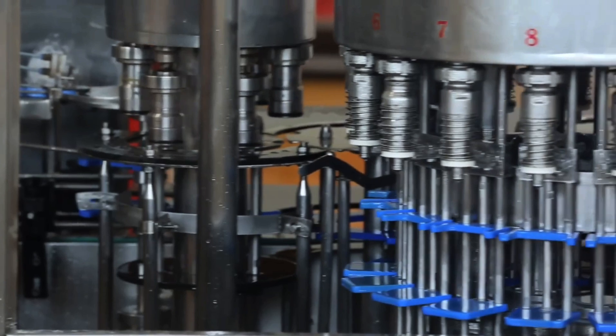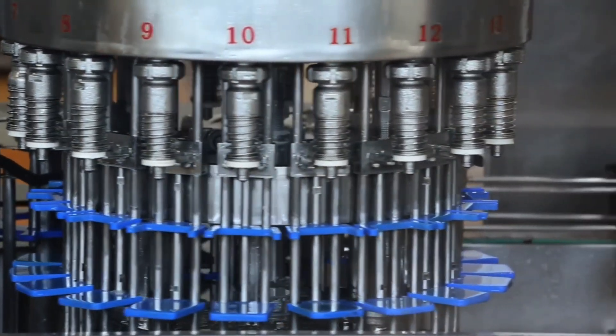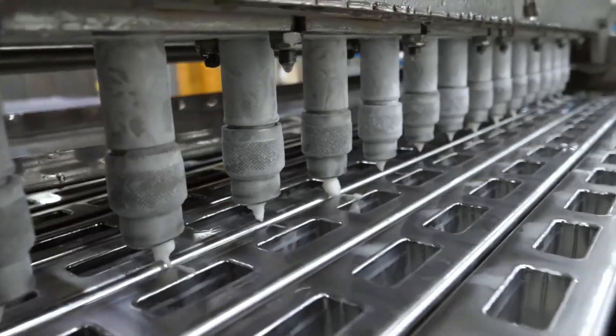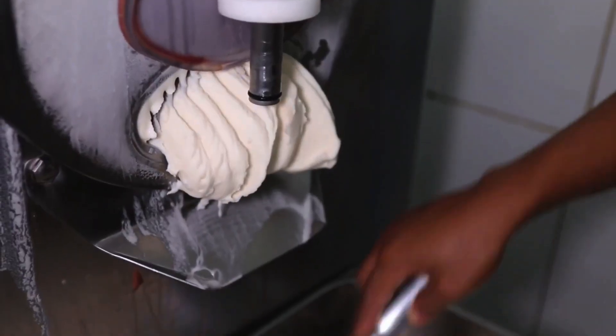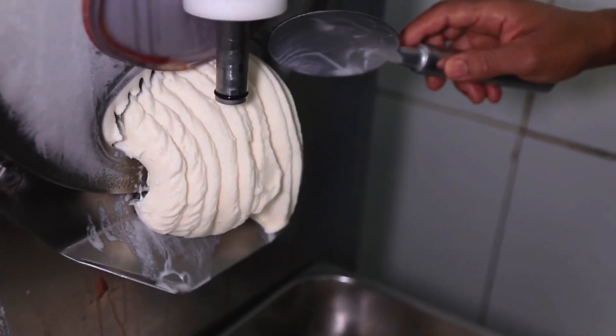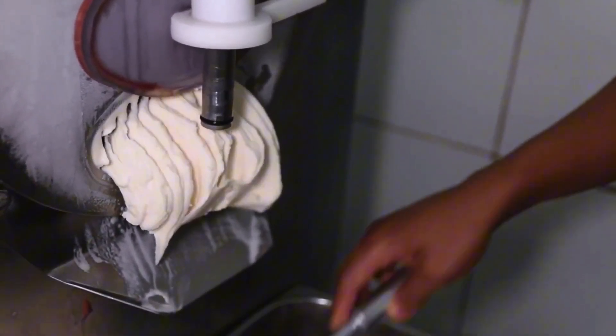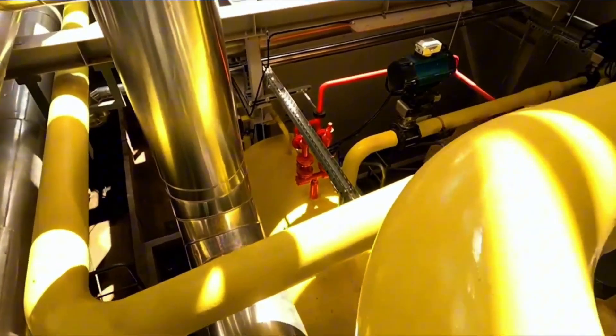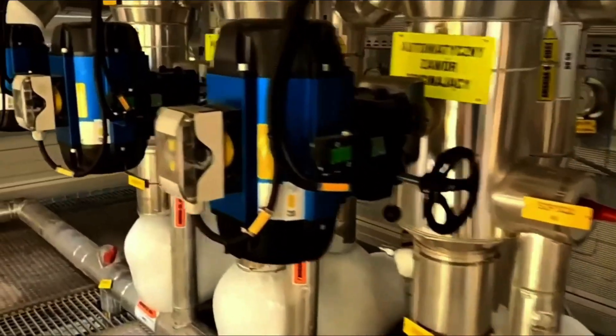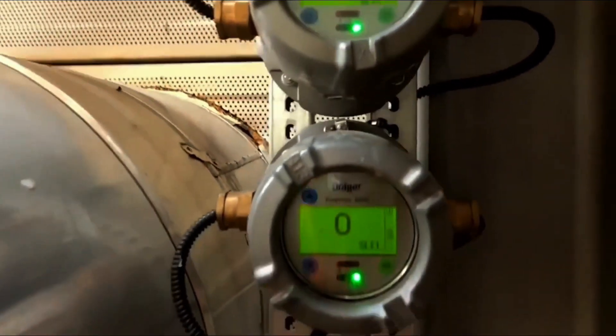Once flavoring is added, the mixture is sent to the homogenizer, a machine that literally breaks down large fat molecules. Under pressures of up to 200 atmospheres, nearly 3000 PSI, the mixture is pushed through microscopic valves, turning it into a silky, smooth emulsion. Thanks to homogenization, the ice cream won't separate during storage and will feel like soft cream on your tongue.